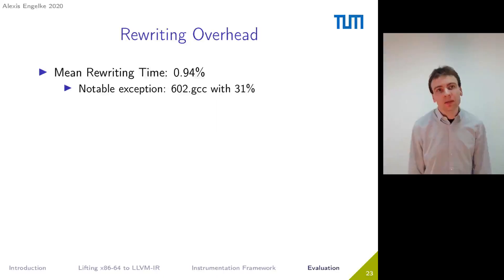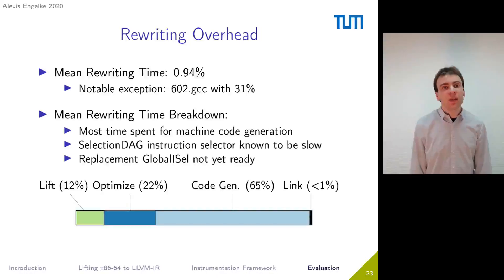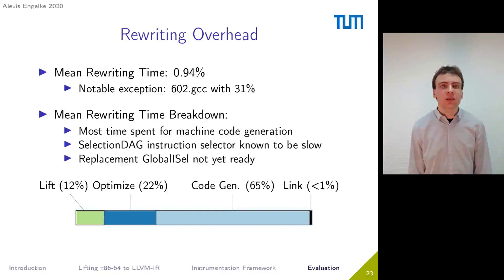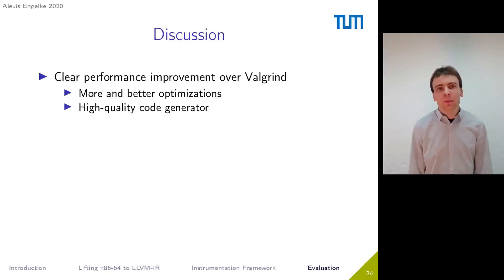To further understand the impact of rewriting time, we analyzed how much time is spent on lifting code, optimizing code, generating new machine code, and linking. We find that two-thirds of the time is spent on machine code generation. The SelectionDAG instruction selector, which we use for high-quality code generation, is known to have performance problems. However, its replacement backend, GlobalISel, is not yet ready and ported for x86-64. The results show that a clear performance improvement over Valgrind is possible due to the use of better optimizations and the high-quality code generator.